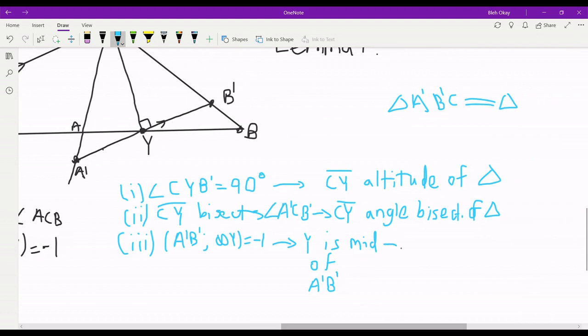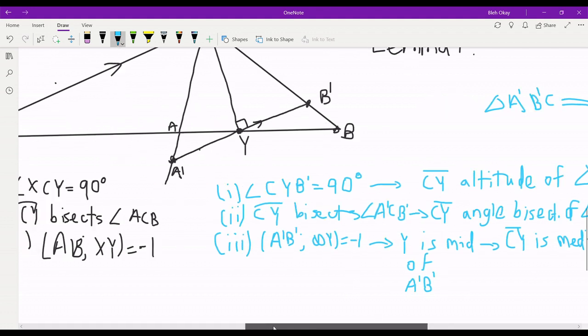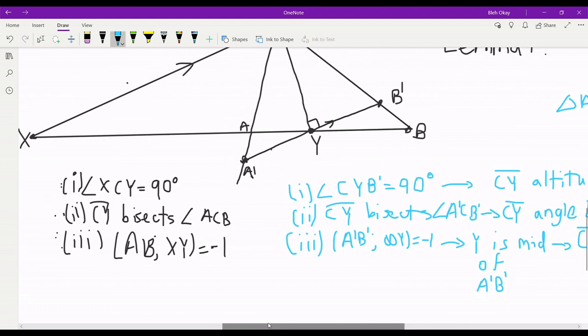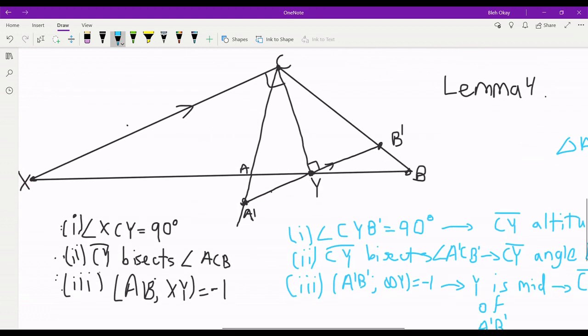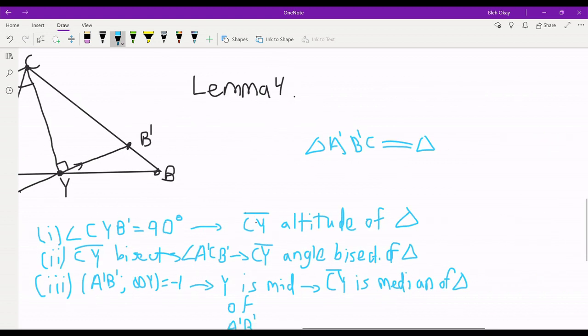So using this projection, we were able to rewrite all three conditions in terms of CY being some special line of our triangle.